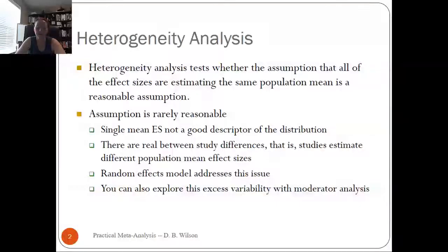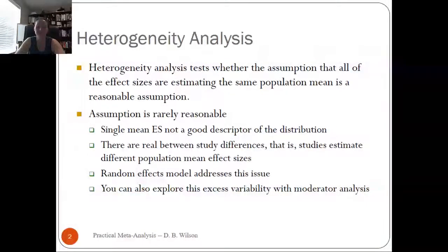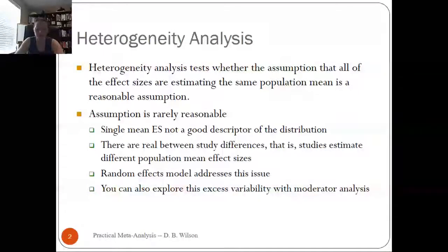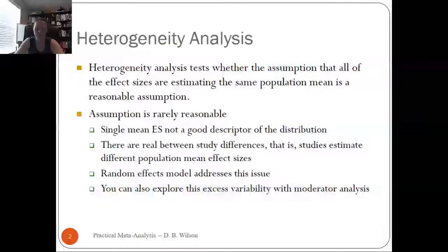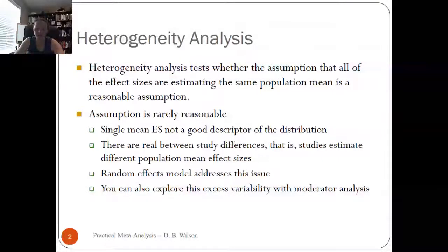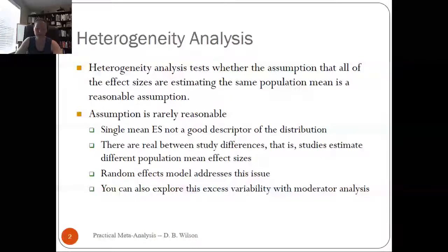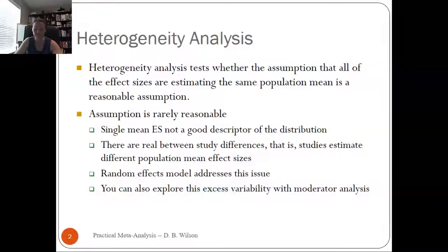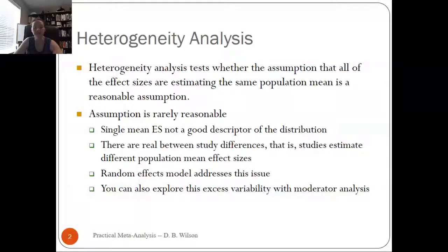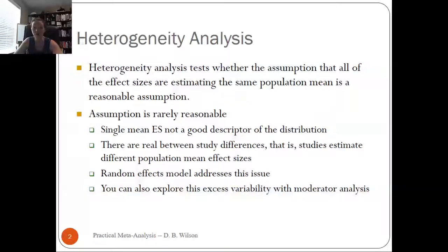We're going to talk about heterogeneity analysis. When we're doing this, we're testing the assumption that all of the effect sizes are estimating the same population mean, and we're testing whether or not that's a reasonable assumption. The Cochran's Q — which is generally just referred to as Q — was designed for that purpose. A statistically significant Q says the effect sizes are heterogeneous, and it's unreasonable to assume they're all estimating the same effect size. You'll notice that Lipsy and Wilson say to calculate Q, and that if Q is statistically significant, you should choose a random effects model over a fixed effects model.